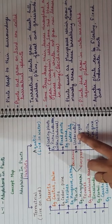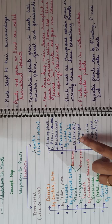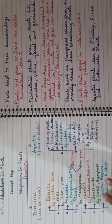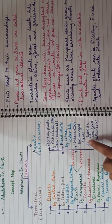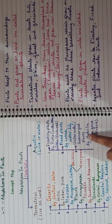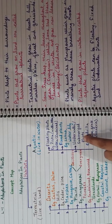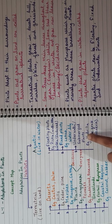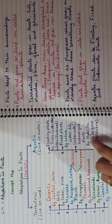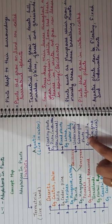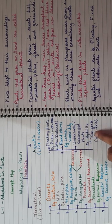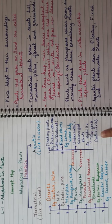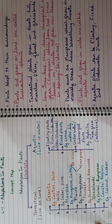Underwater plants, as mentioned, are totally submerged in water — they are completely inside the water. Examples are hydrilla and tape grass, which is also known as vallisneria.